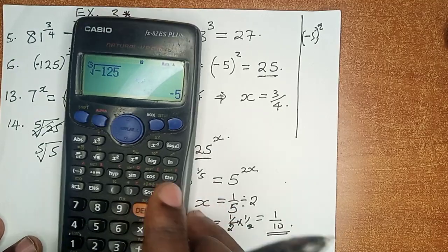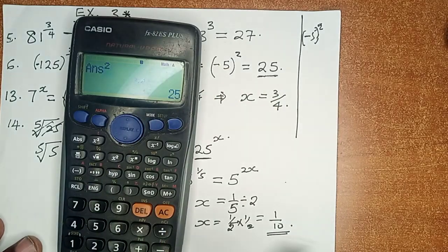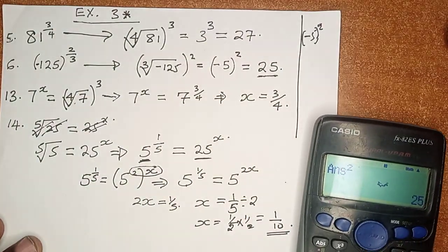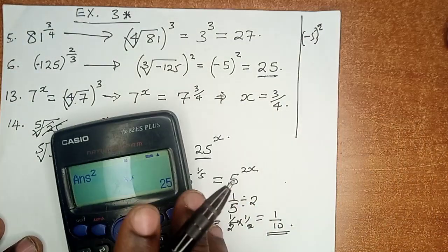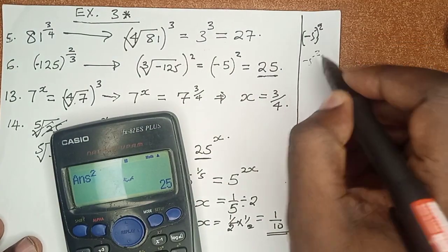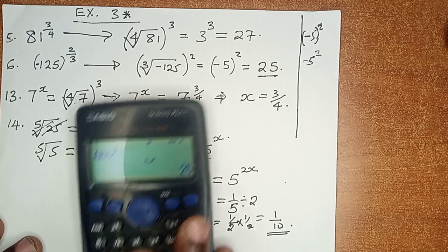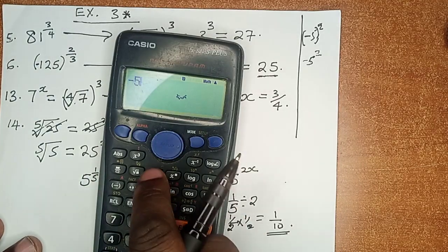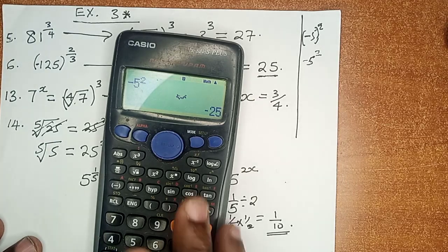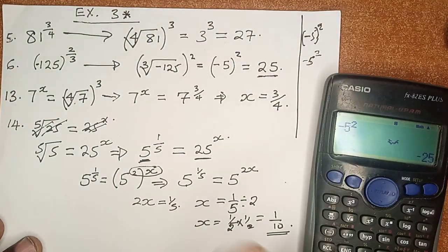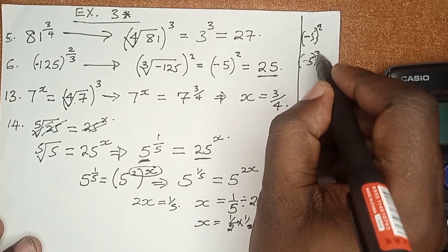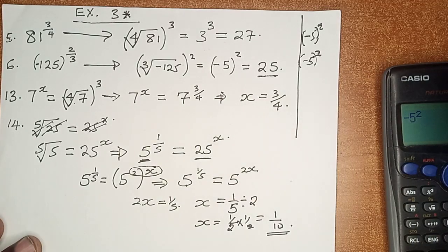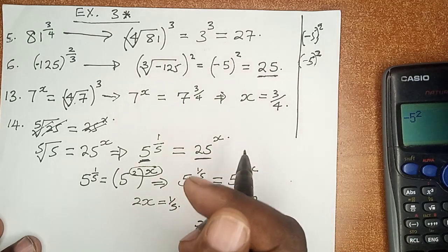It is this negative 5 that we must now square to give us positive 25. But care should be taken because if you just have negative 5 squared, barely like that inside the calculator, you can easily get negative 25 which is not the case. So remember to put into the bracket negative 5 because even the negative itself is squared. And you know that when a negative is multiplied by a negative number, it should give you a positive number.